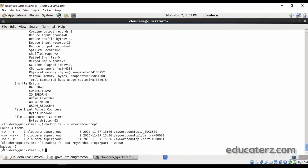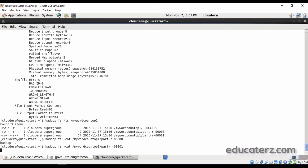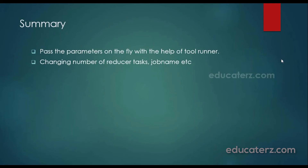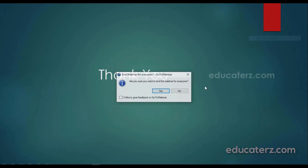You can see the content of these files — for example, 'hadoop' appears twice, so it shows 'hadoop, 2'. Internally it uses the HashPartitioner to distribute keys across the output files. We have seen how to implement the run method and change the number of reducer tasks dynamically via the command line. You can also change case sensitivity, job names, and many other parameters. Thank you, let's catch up in the next module.